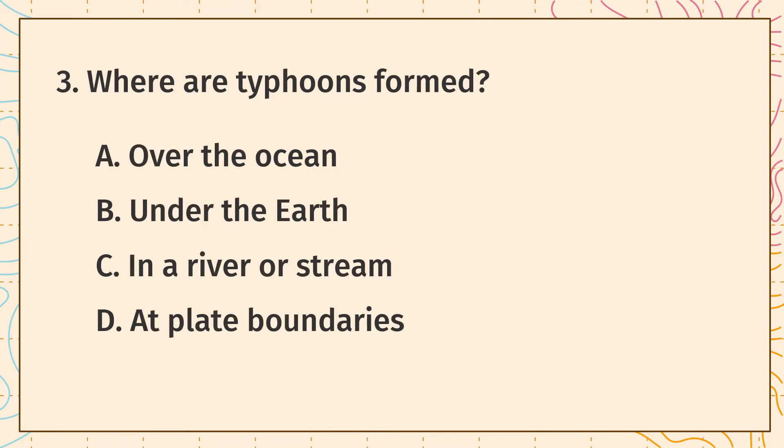Question 3: Where are typhoons formed? A. Over the ocean. B. Under the earth. C. In a river or stream. D. At plate boundaries.